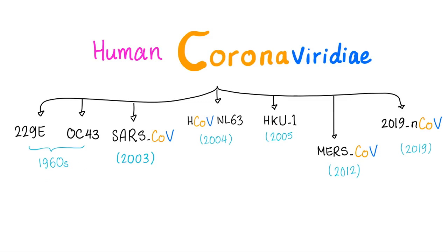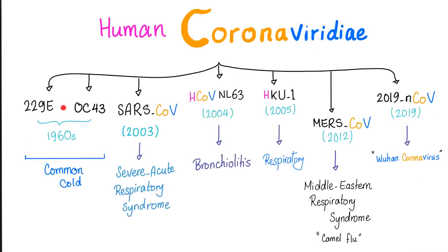The 2019 novel coronavirus is also known as the Wuhan virus. Coronaviruses 229E and OC43 date to the 1960s. Then came SARS-CoV, human coronavirus NL63, HKU1 in 2005, MERS (Middle Eastern Respiratory Syndrome) in 2012, and the Wuhan virus in December 2019. The first two cause common cold; SARS causes severe acute respiratory syndrome; NL63 causes bronchiolitis; MERS is also known as the Camel Flu. Have you noticed? All of them cause respiratory diseases.